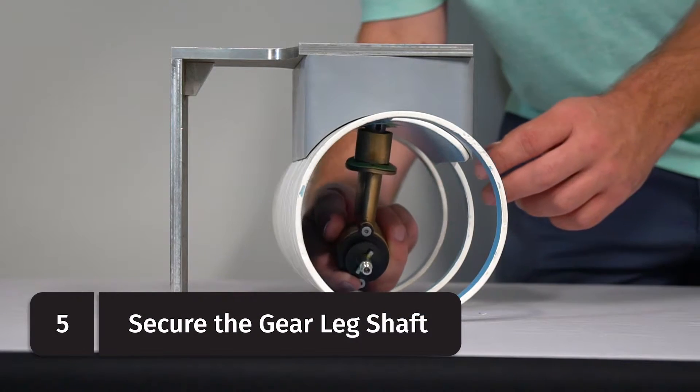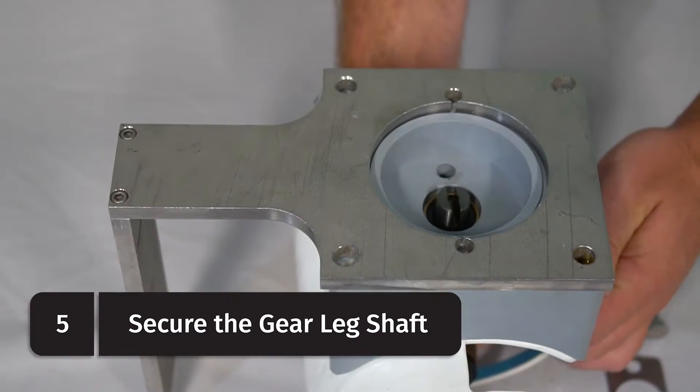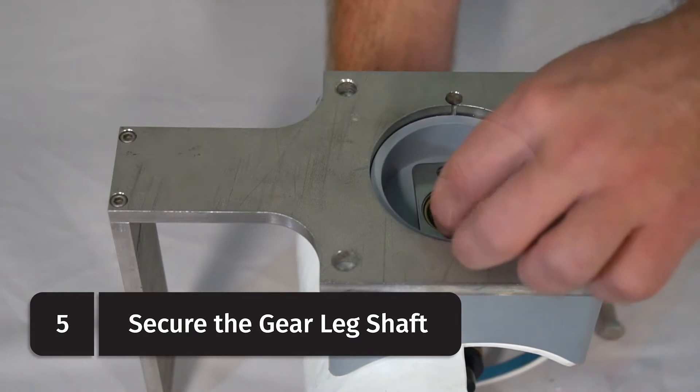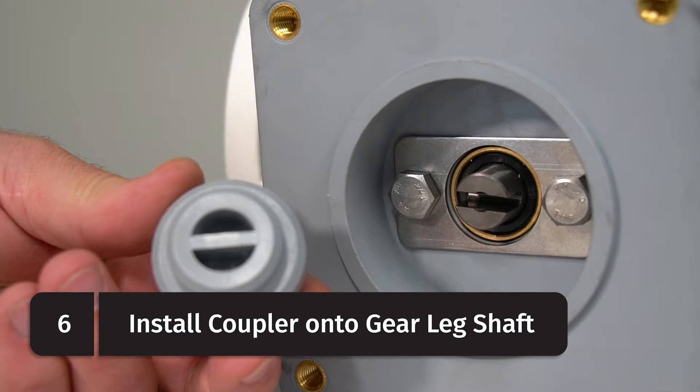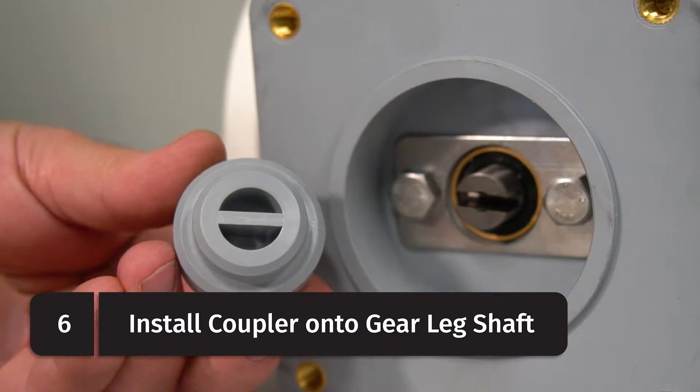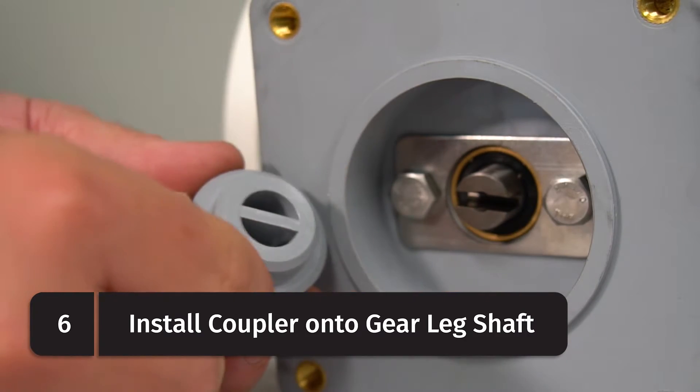Now it's time to insert the gear leg shaft into the larger center hole, align the bolt holes and secure it into place with the supplied hex head bolts. Then install the coupler onto the gear leg lining the ridge on the bottom of the coupler up with the slot on the top of the gear leg shaft.